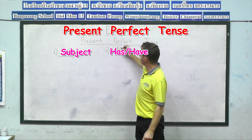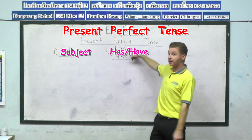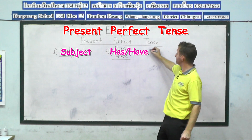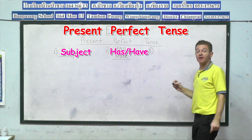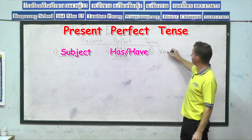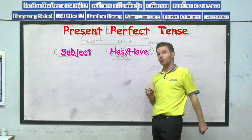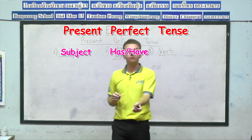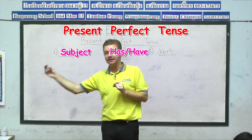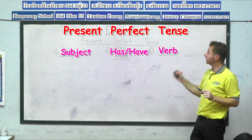We have to use has or have, but we're only sure which one once we know who the subject is. And then after has and have comes the verb — the important verb word. Now when we talk in the present perfect tense, because we are talking about events that have already happened, we use the past tense form of the verb. For example, I would not say talk, I would say talked. I would not say play, I would say played.